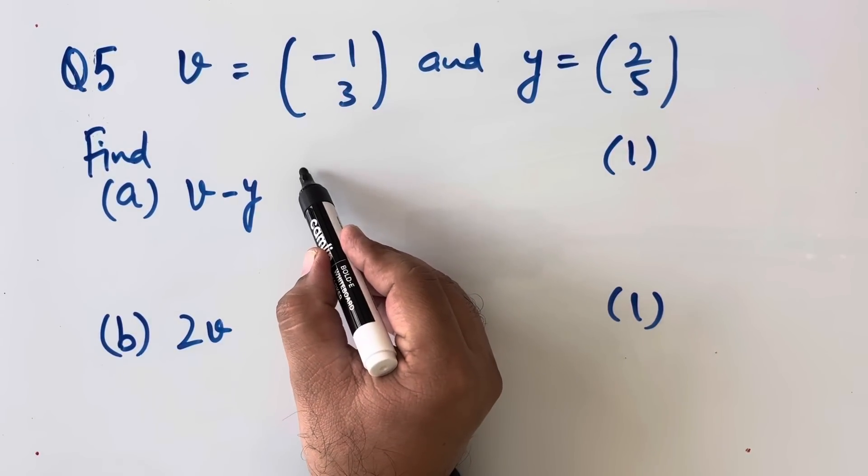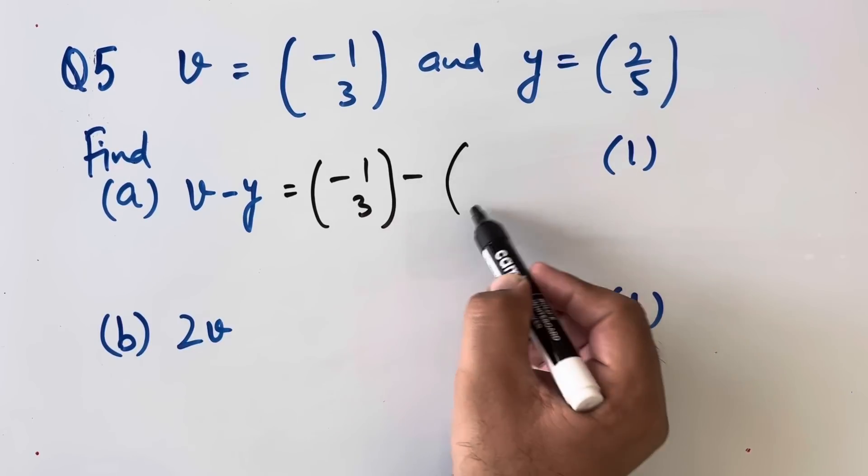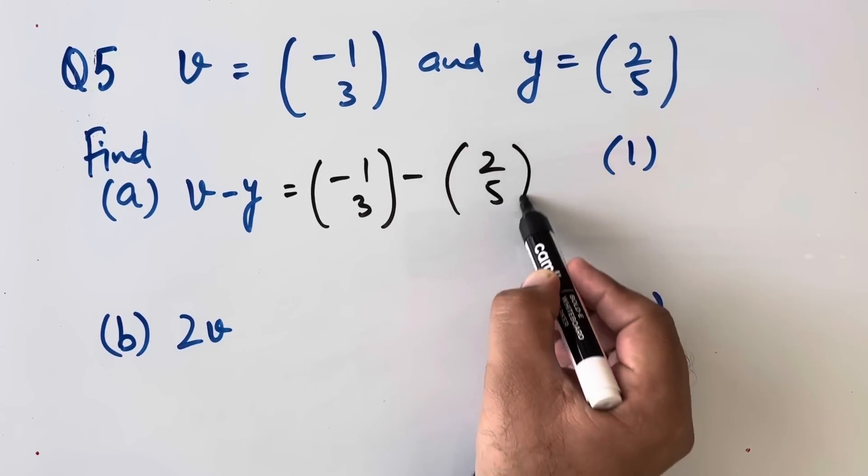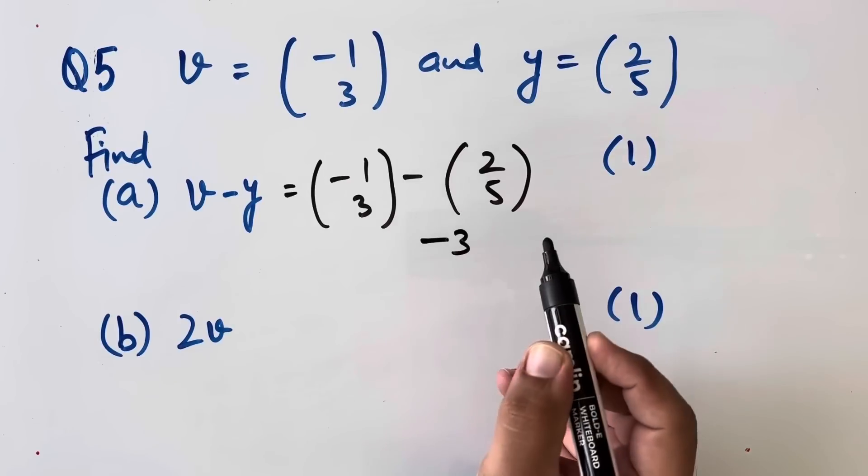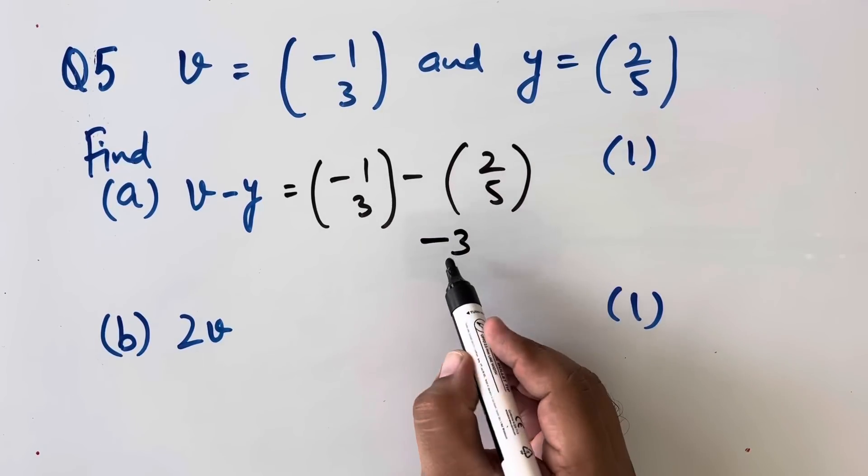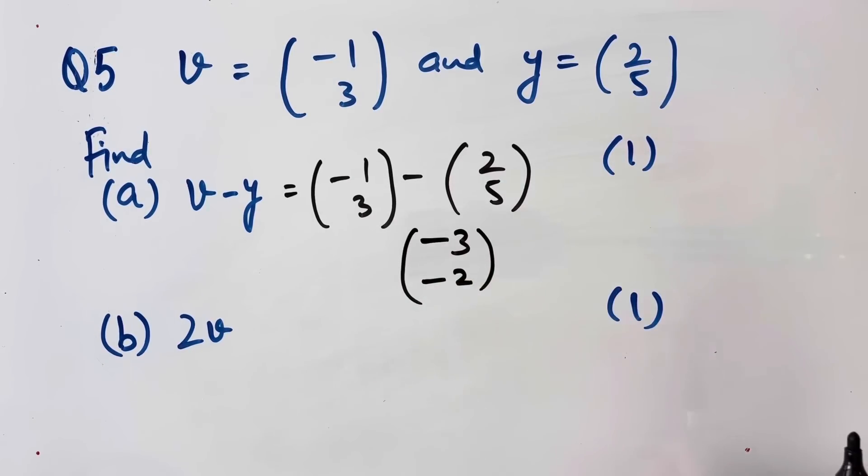So v minus y, we will be writing it as (-1, 3) minus (2, 5). This will be our answer.